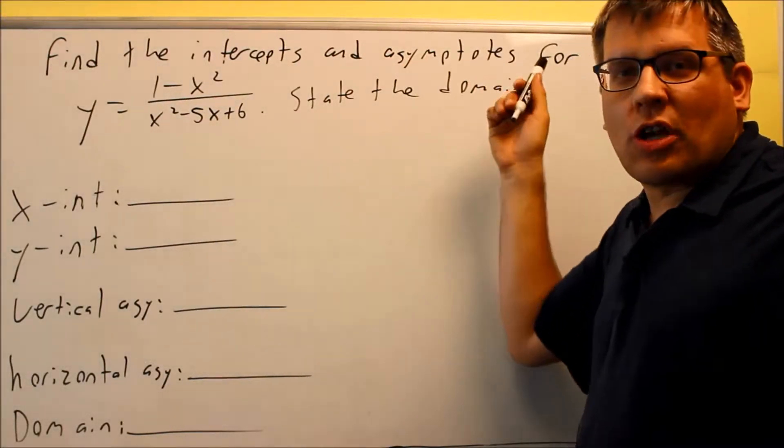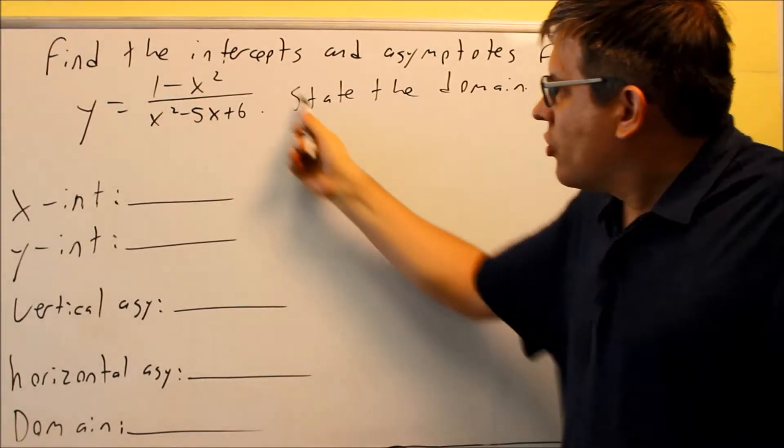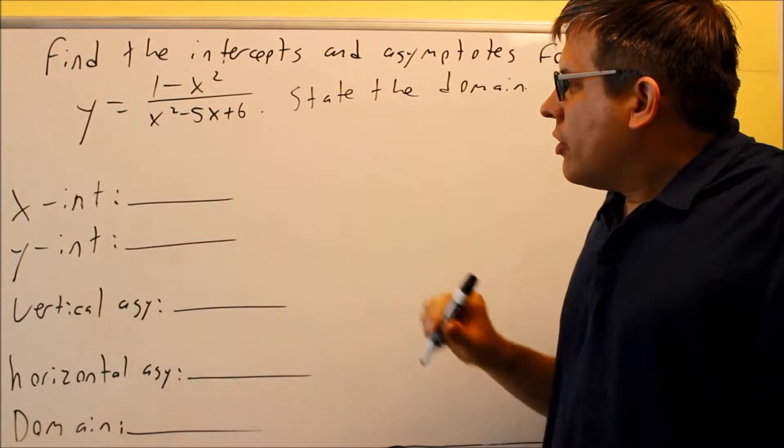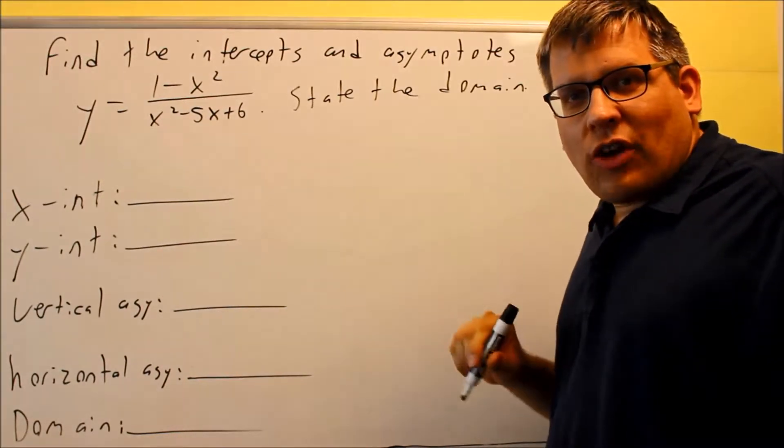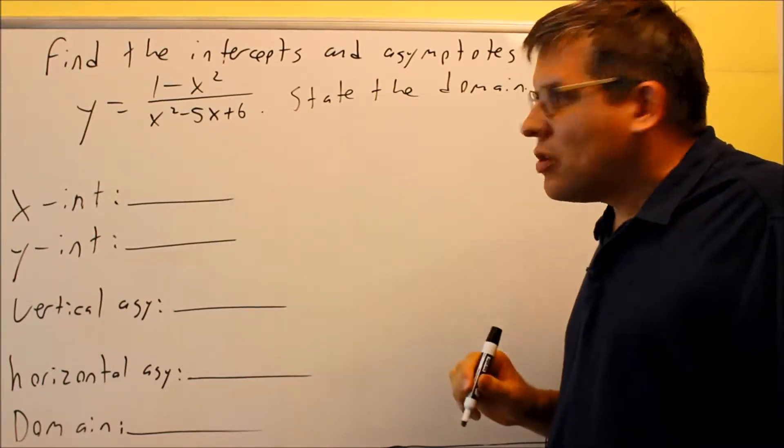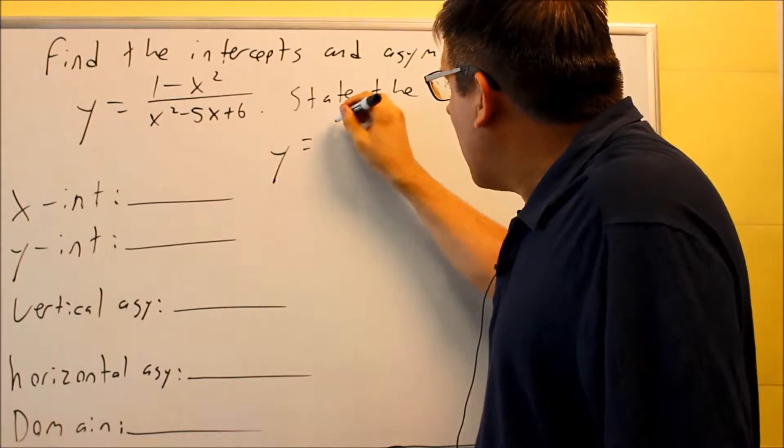Okay, we have another one. We're going to find the intercepts and asymptotes. This time we're also going to add in the domain. So here is our original equation. Whenever you do these, it's always best to first factor top and bottom to make sure you can't cancel anything out because sometimes you may have to do some canceling. So for this, if we factor it,